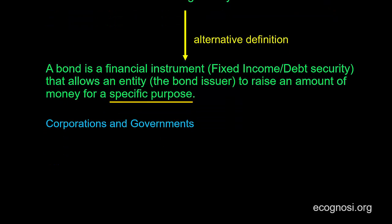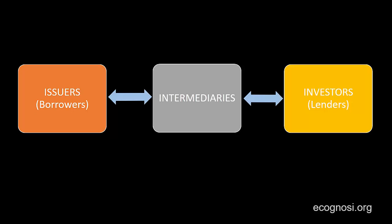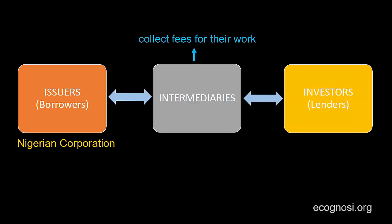I prepared this graph to give you a general idea of what the process of issuing bonds entails. Starting from the left, we have the issuers of bonds, who are the borrowers of funds — going back to our example, that's the Nigerian-based corporation. Moving to the right, we have intermediaries that facilitate the issue. They will not do it for free; they receive compensation in the form of fees for their work. These intermediaries are typically investment banks.